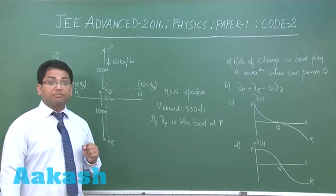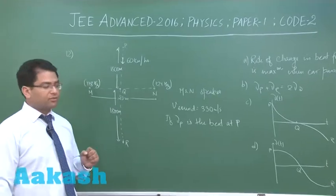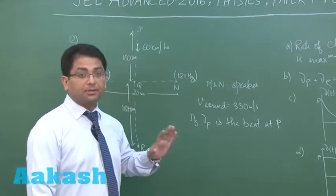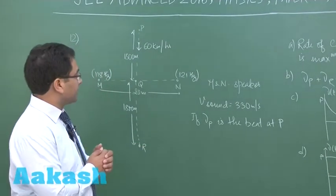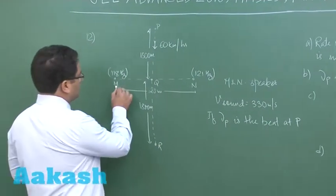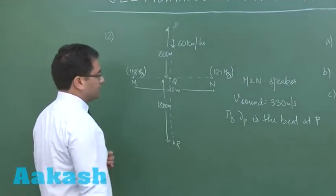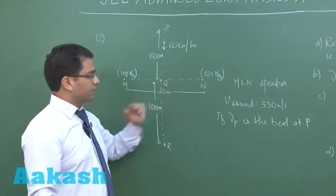Question number 12 is another beautiful question that has been framed from the topic waves and Doppler's effect, and the concept of beat is very beautifully put up here. There are two sources M and N producing frequency 118 hertz and 121 hertz. They are separated by 20 meter.